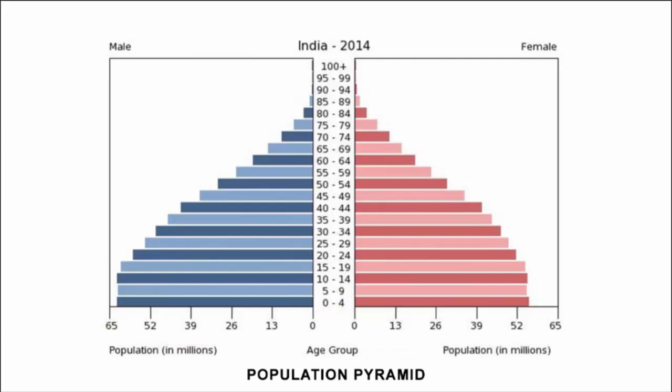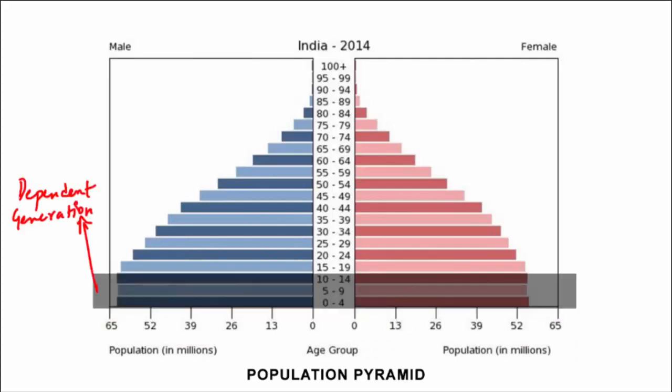If you look at the age group of 0 to 14 years, their population bar is extremely high. They are also known as the dependent generation, meaning they are living with their parents or guardians and are mostly dependent on them for resources.